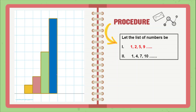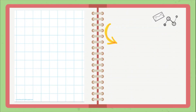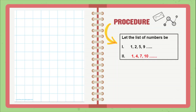Likewise, we can represent these lists of numbers on squared paper — you can also use graph paper for the same. Now let us represent the second list of numbers in a similar way. The second list is 1, 4, 7, 10.